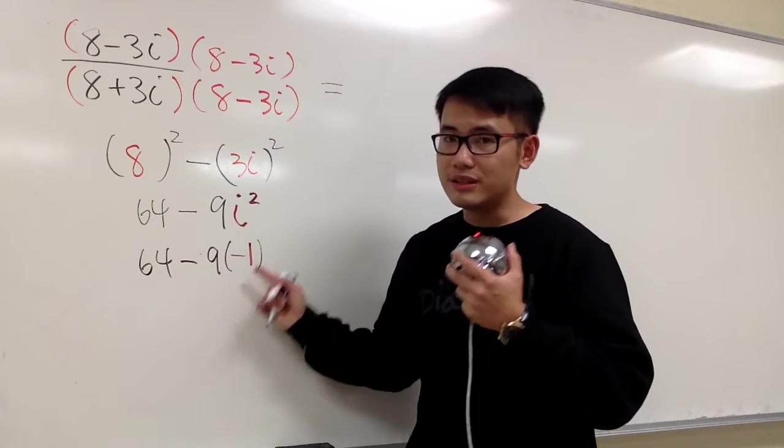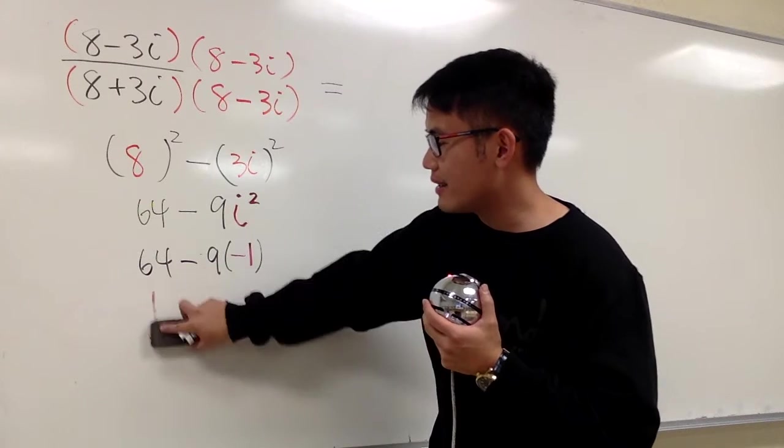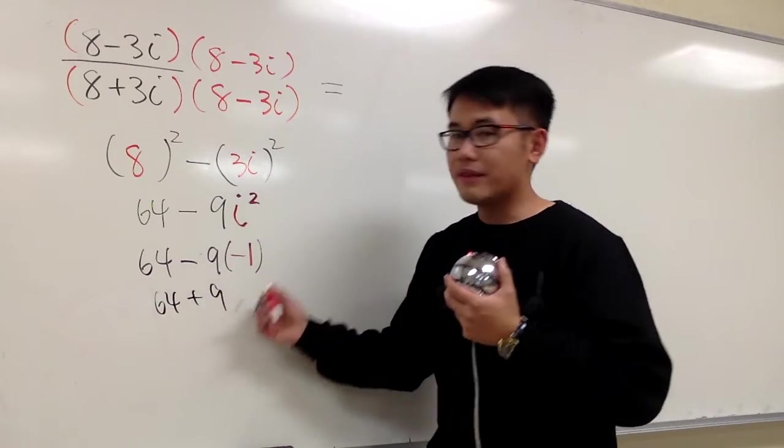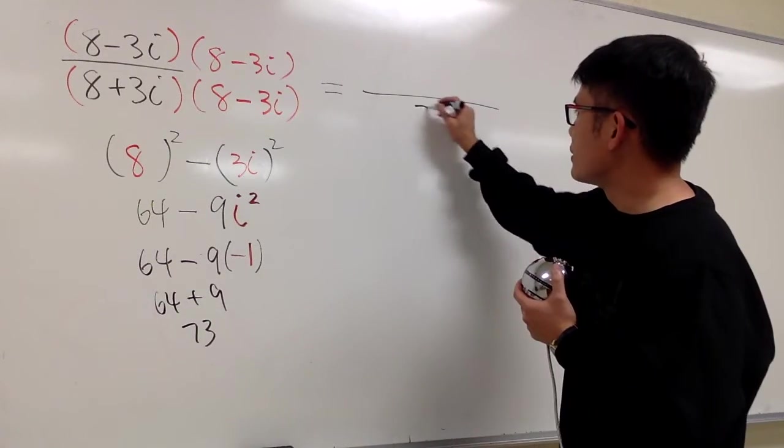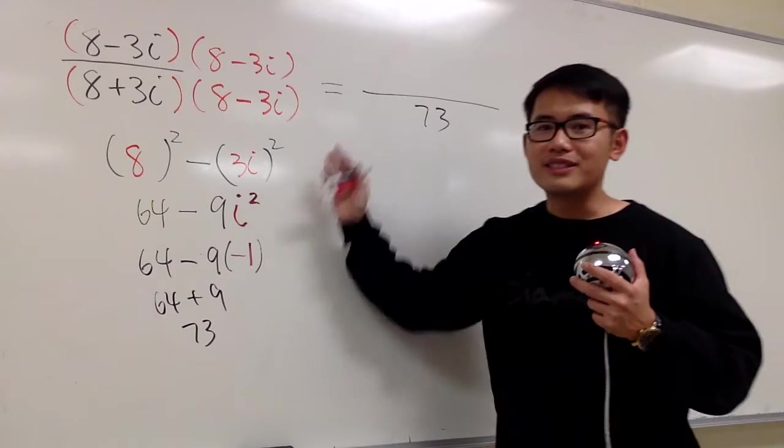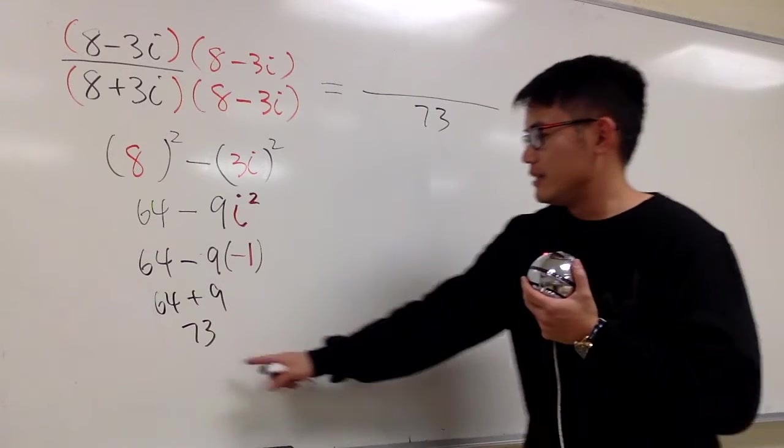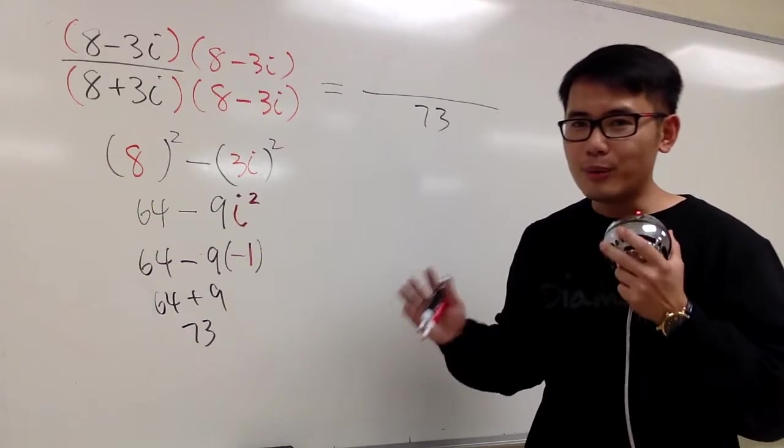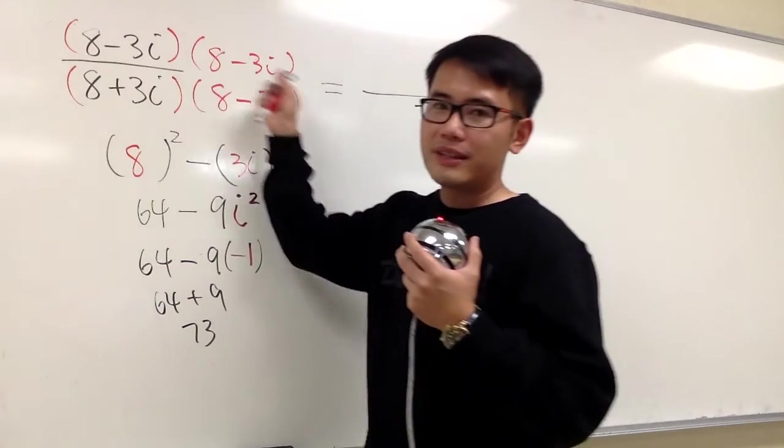This right here is pretty much changing to add the 9. 64 plus 9. This is pretty much 64 plus 9, and you have 73 at the end. So that's on the denominator. And perhaps some of you guys can save a few steps, but I just want to show you guys all the details. You see, at the end, the denominator is just a regular number. No more i's, no more radicals.